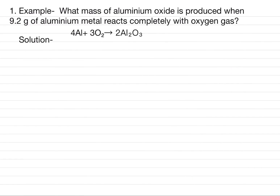Let us do an example to understand these steps. Example one: what mass of aluminium oxide is produced when 9.2 grams of aluminium metal reacts completely with oxygen gas? The equation is: 4Al + 3O₂ → 2Al₂O₃. The first step is to balance the equation.